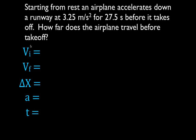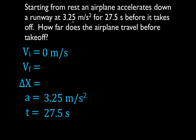Do we know the initial velocity? It says the plane starts from rest, so the initial velocity is zero meters per second. Do we know the final velocity? No. But we do know the acceleration, we know the time, and we're solving for the distance, delta x. We don't know the final velocity. Write down all five, fill in what you know and what you don't know — you'll notice you've been given three variables and you're solving for the fourth.